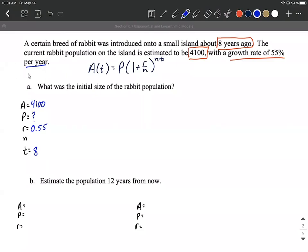And then this per year also gives us some pieces of information, that the number of times this happens per year, that our compounding happens. That's n down here. So when we say it's 55% per year, that's happening once in a year. So I'm going to put one in for n.